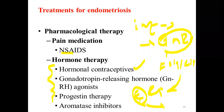Similarly, gonadotropin-releasing hormone agonists work by initially activating and increasing estrogen levels in the first two to three weeks of therapy, but with chronic administration they cause downregulation of the receptor, ultimately reducing estrogen levels after two to three weeks of treatment.